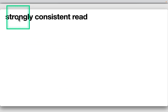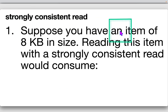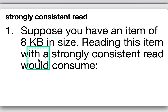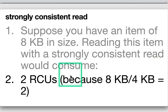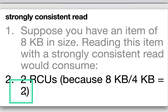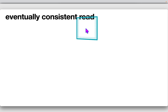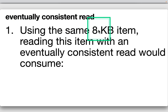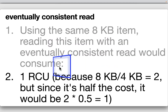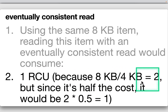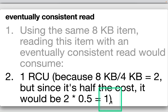For a strongly consistent read of an 8KB item: 8KB divided by 4KB equals two, so it consumes two read capacity units. Using the same 8KB item with an eventually consistent read, the cost is half — two divided by one-half equals one RCU.